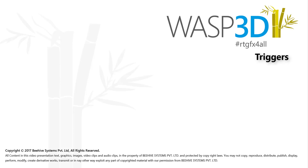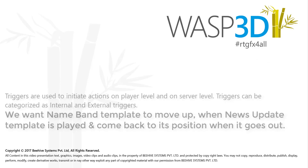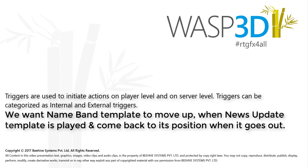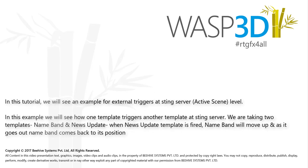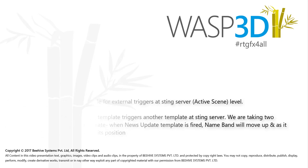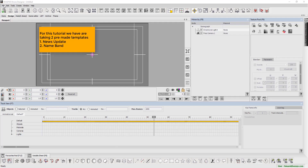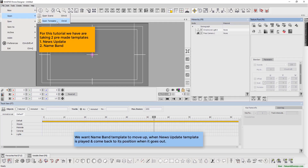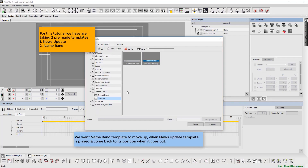Hello and welcome to WASP 3D feature tutorial. In the following tutorial, users will learn how triggers can be used to initiate actions on player level and on server level. We will showcase an example of how a name band moves up when a news update is played, and returns to its original position once the update plays out. For this tutorial, we are using two pre-made templates of a name band and a news update.